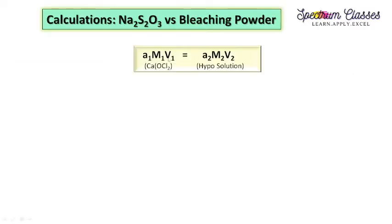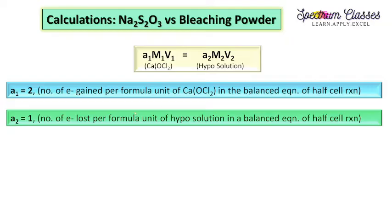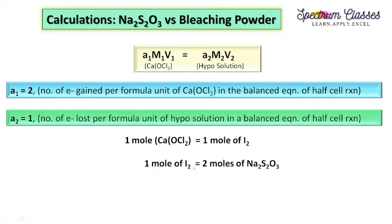For redox titration we use a₁ and a₂ coefficients, where a₁ is the number of electrons gained per formula unit of bleaching powder, and a₂ is the number of electrons lost per formula unit of hypo solution. Here a₁ = 2 and a₂ = 1. This gives us: (M₁ × V₁) / 1 = (M₂ × V₂) / 2, or equivalently 2·M₁·V₁ = 1·M₂·V₂, confirming a₁ = 2 and a₂ = 1.